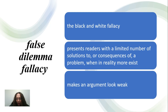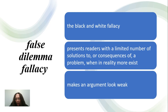The next type of fallacy is the false dilemma fallacy. The false dilemma fallacy is also called an either-or fallacy or a black-and-white fallacy because it sets up only two choices in a complex situation, while in reality there are more than two choices. Therefore, this type of fallacy oversimplifies the issue by claiming that there are only two options.